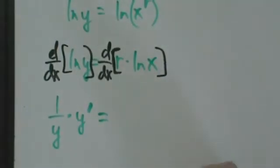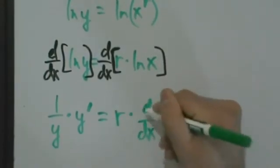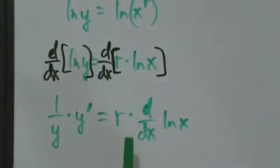Now on the right, what do we have? r is just a constant, so we can actually just pull it out. So r is just a constant, so we can pull it out. And that's nice because that makes this a little bit simpler.